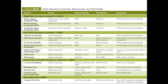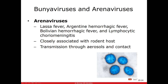Some diseases in the bunyaviridae group are spread by insects, including our own LaCrosse encephalitis. The arenaviruses are still spread by animals — generally rodents. Most cases of arenaviruses are in Africa. If you travel and know you're going to have contact with rodents, take extra precautions. Arenaviruses are usually transmitted through aerosols from infected animals or direct contact, so be wary of where you go.